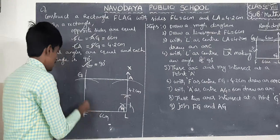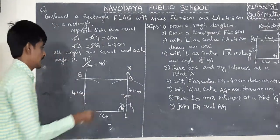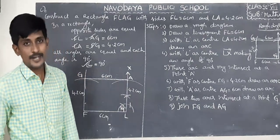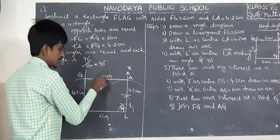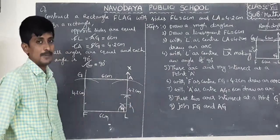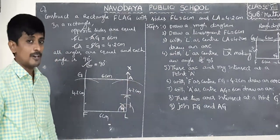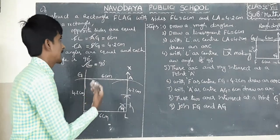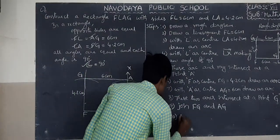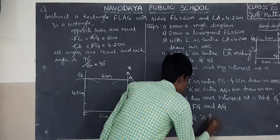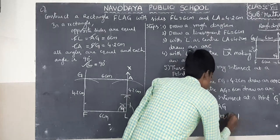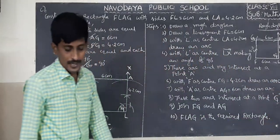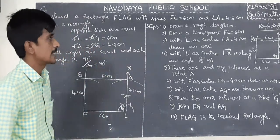FG equals to 4.2 centimeters, AG equals to 6 centimeters. So now FLAG is the required rectangle, because opposite sides are 6 centimeters and 6 centimeters, and 4.2 centimeters and 4.2 centimeters, and the angle is 90 degrees. If a quadrilateral has opposite sides equal and one angle is 90 degrees, then it is called a rectangle.